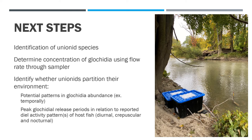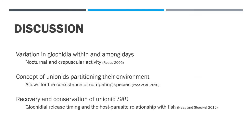In the steps to come, glochidia will be identified to the species level, the concentration of glochidia using the flow rate through the sampler — from the outflow tube shown here — will be determined, and the research question regarding the potential for unionids to partition their environment will be addressed. Based on the preliminary data, there is variation in glochidia within and among days, particularly at nocturnal and crepuscular periods. This brings forward the concept of unionids partitioning their environment with the release of glochidia at different times.